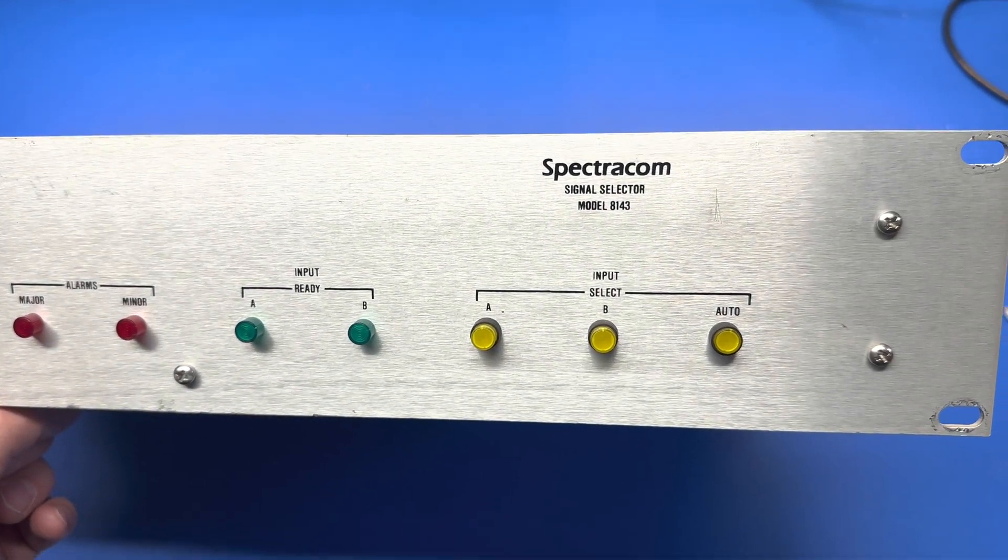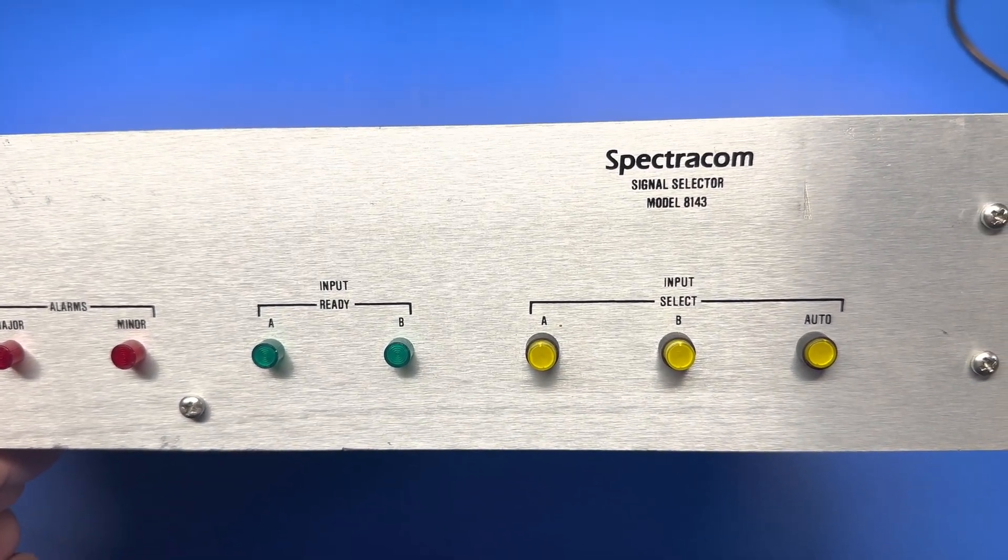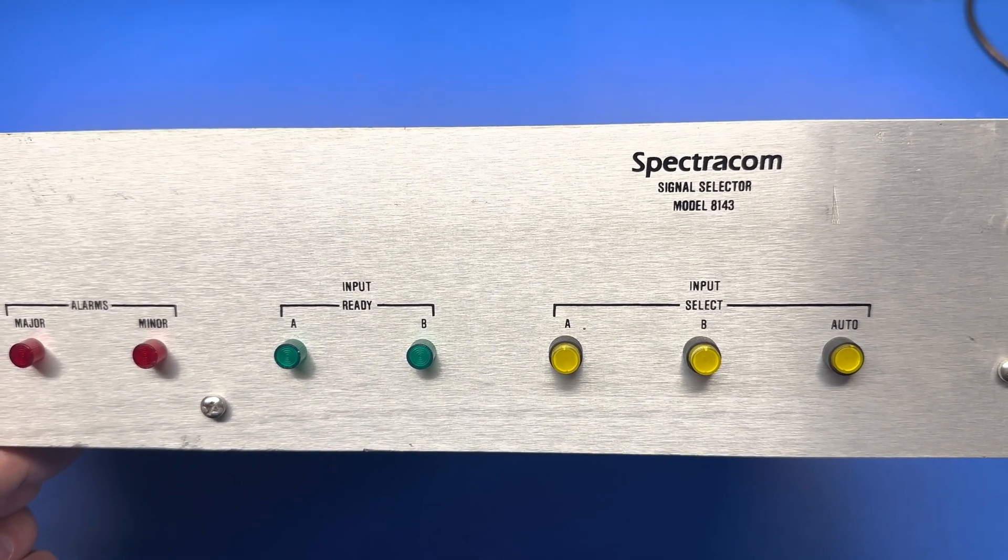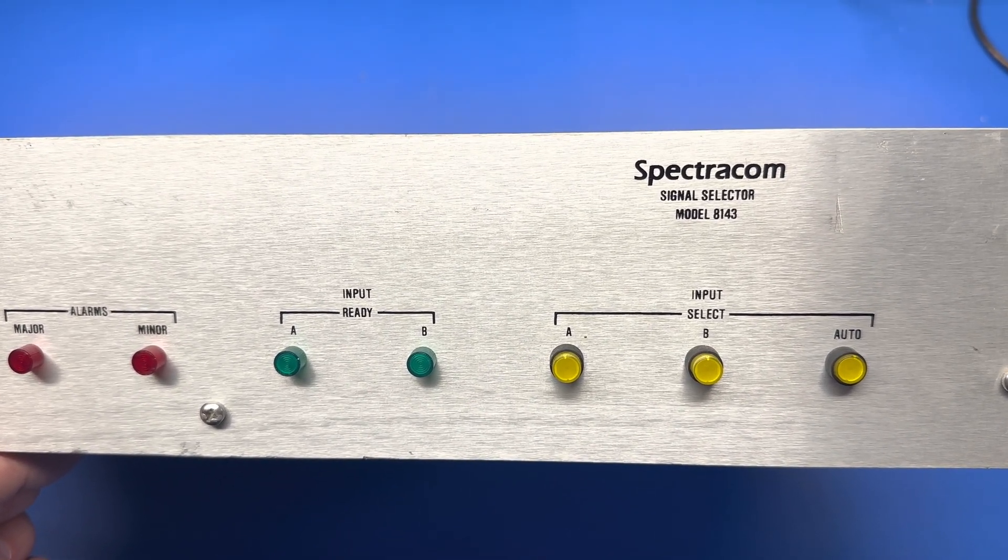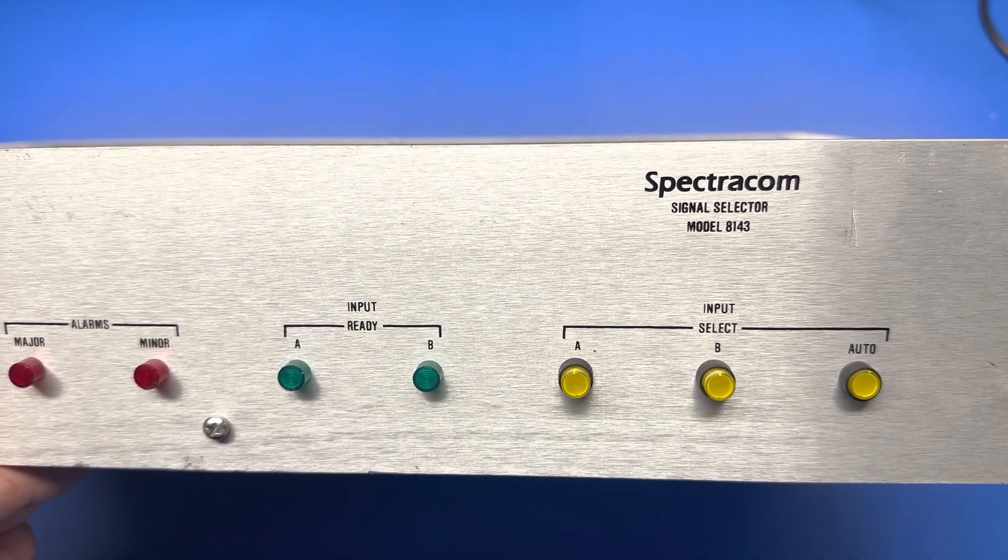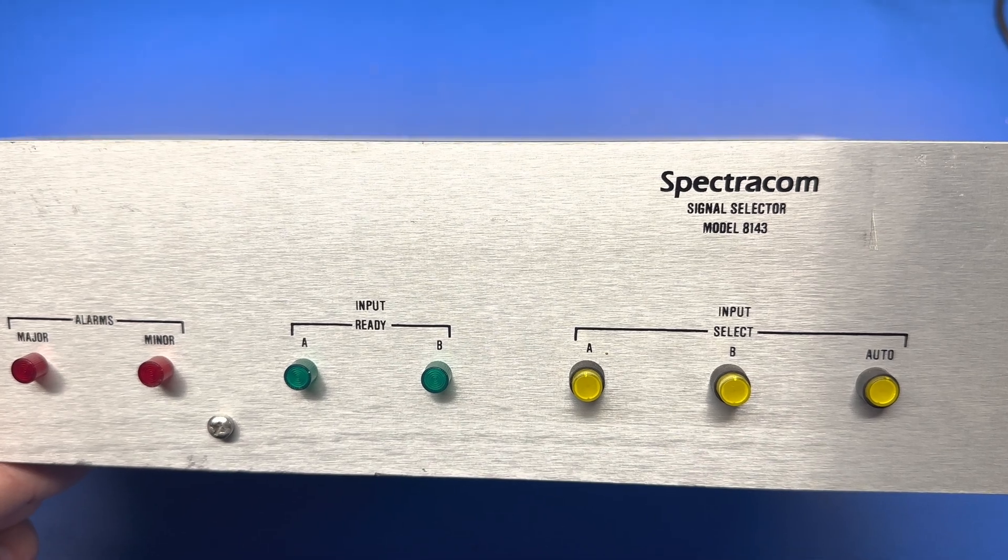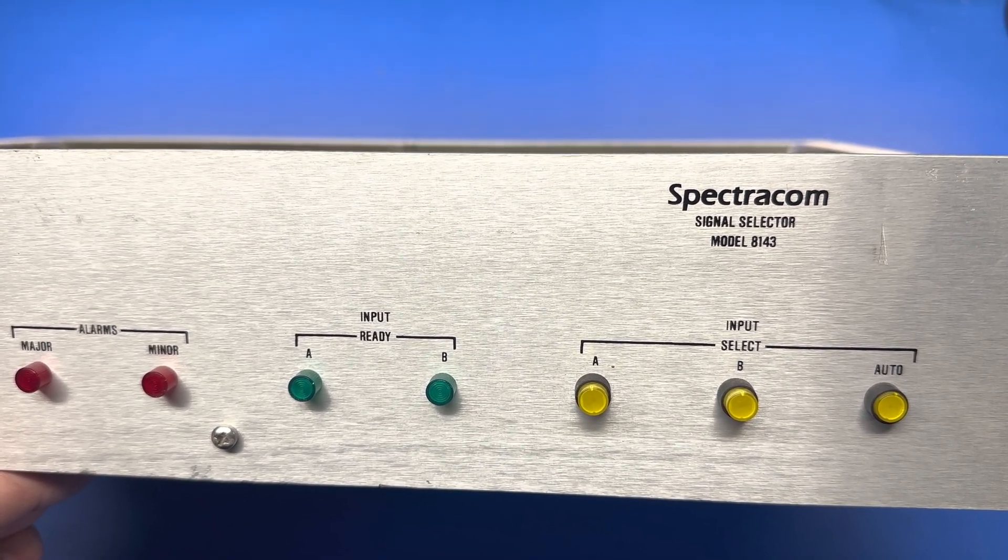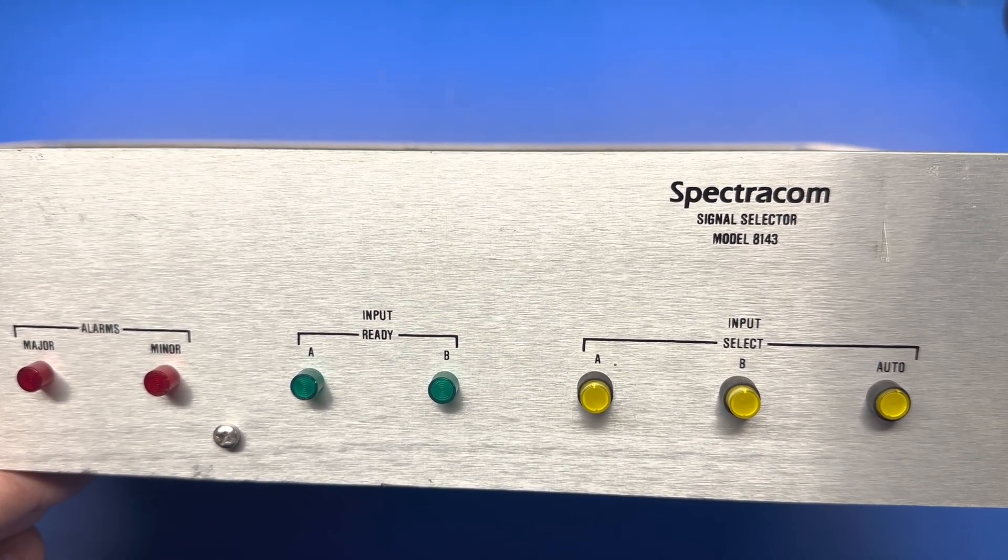I was looking for a distribution amplifier for my GPS Disciplined Oscillator for my test equipment and noticed they were pretty expensive. I was familiar with Spectracom since we used some of their equipment at work. I also have the NetClock 9283 as my GPS Disciplined Oscillator.